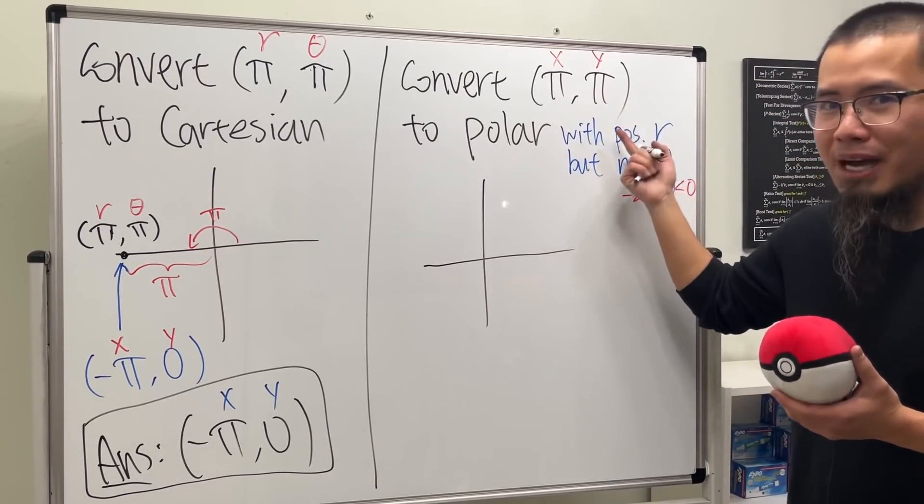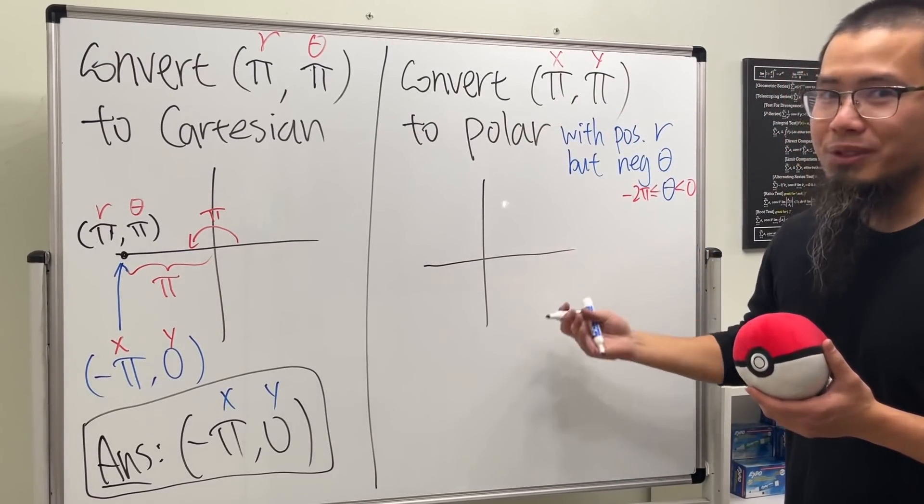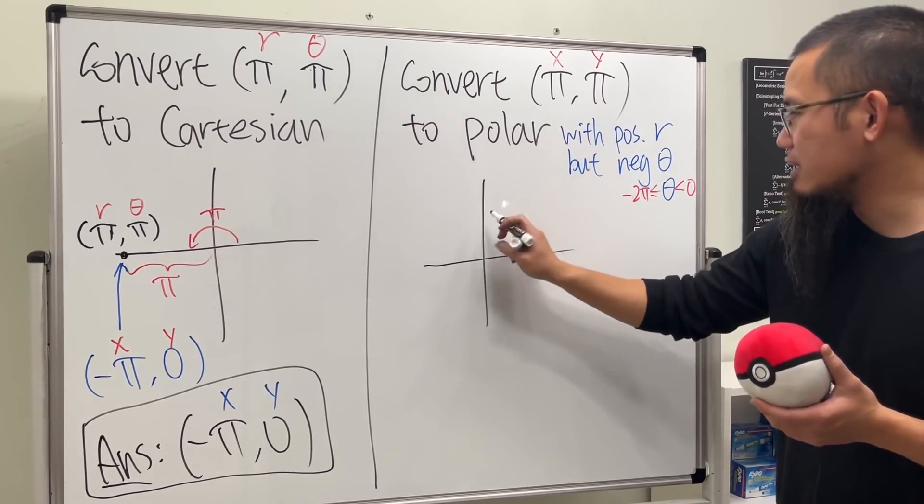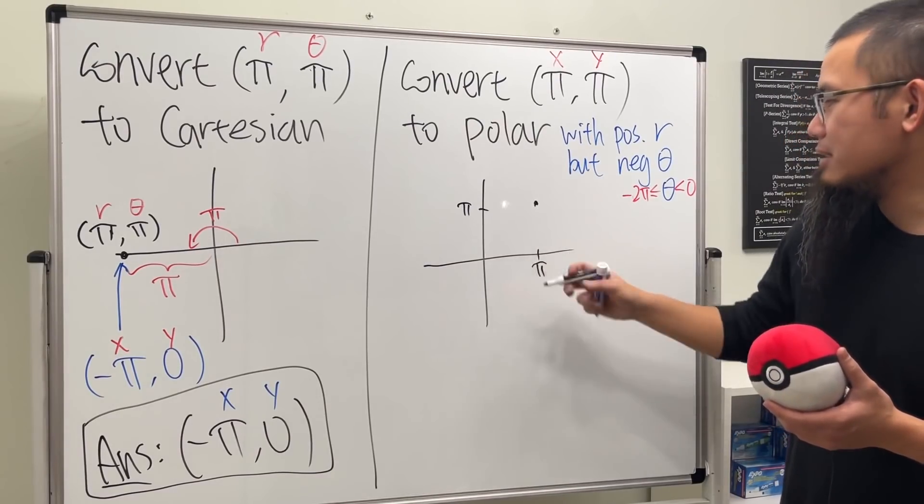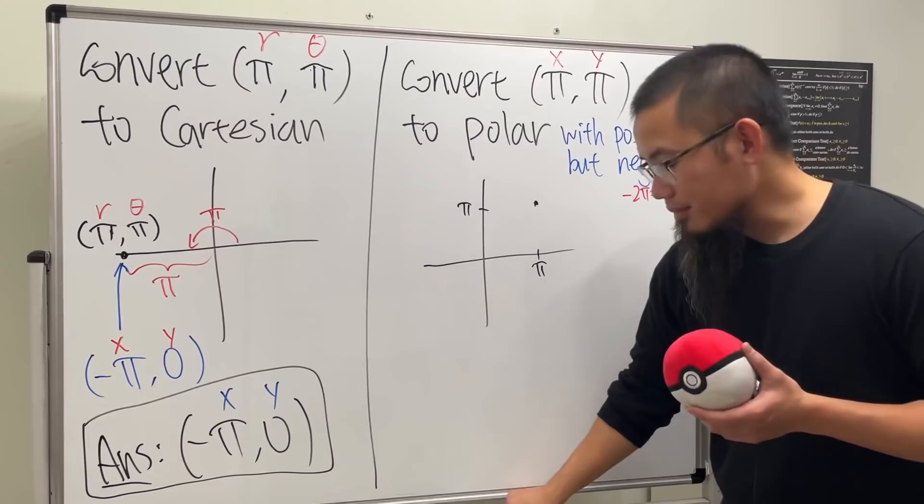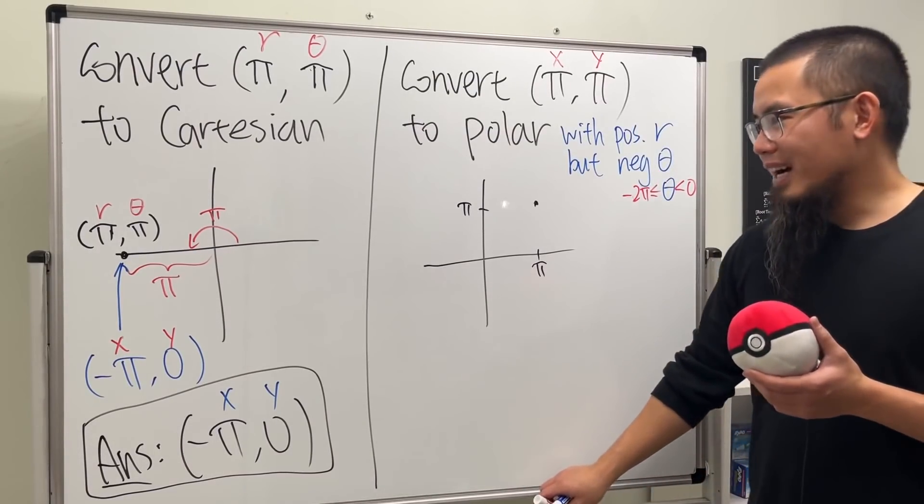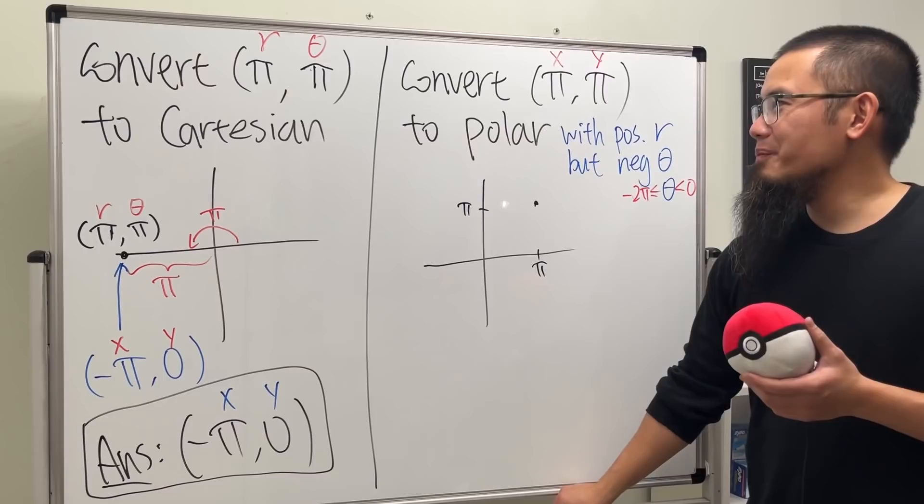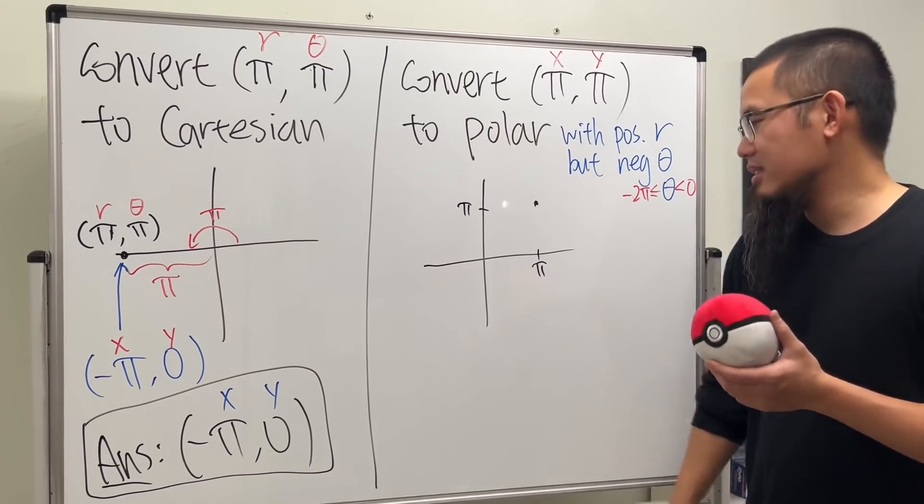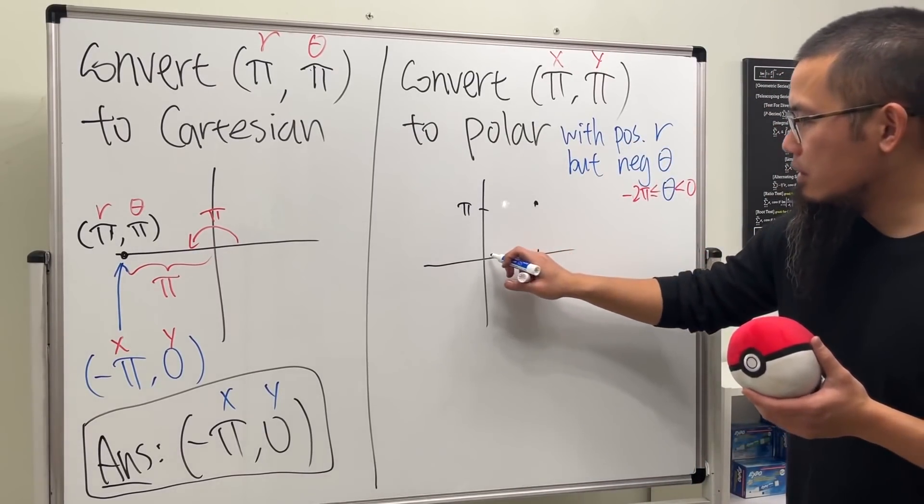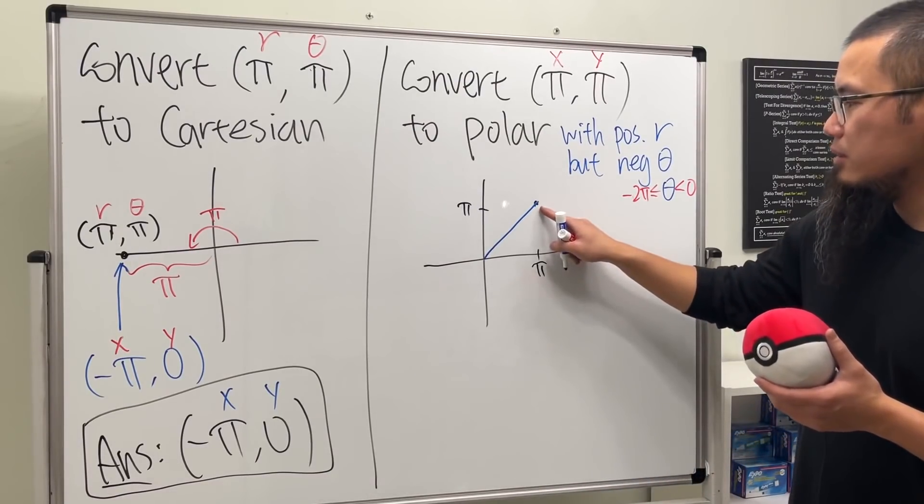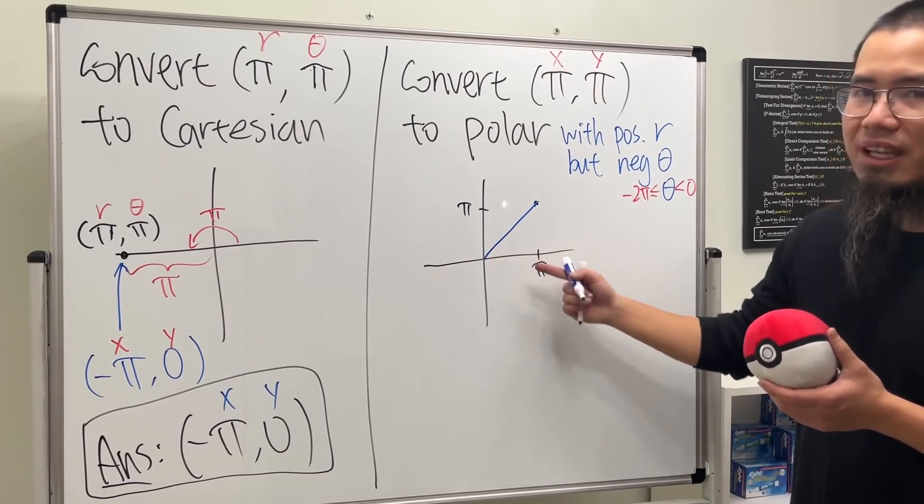This time, to plot (π, π) you do it the usual way. Let's say this is π on the x-axis, and then that's it. This is π, so (π, π) is this point in the regular sense. Now to find the polar coordinate, we need two things: the angle and also the distance. We want the r to be positive, so let's take a look at the distance first, which is just from here to here. In fact, this is just a 45-45-90 special right triangle.